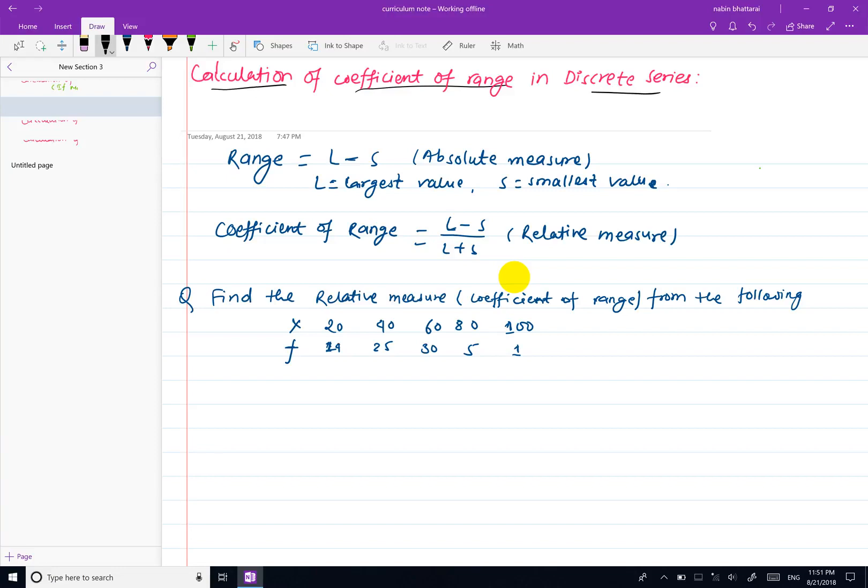In this video, we will calculate the coefficient of range. We will calculate the range. The range is L minus S, where L is the largest value and S is the smallest value. This is an absolute measurement.